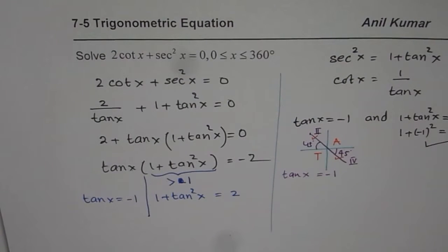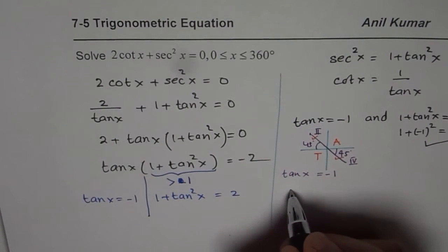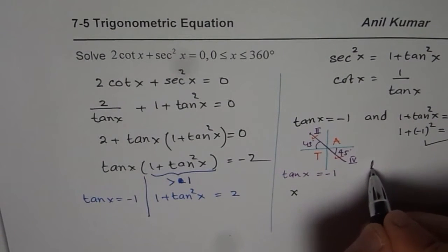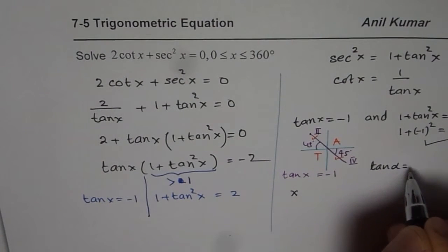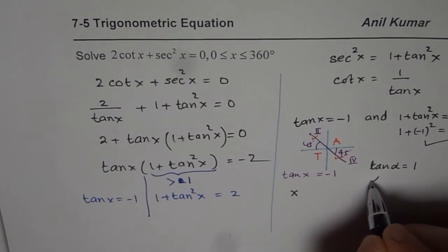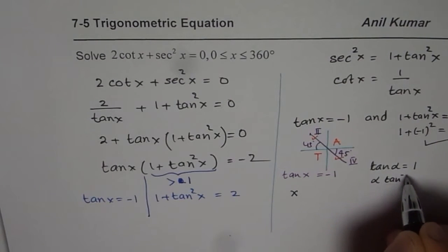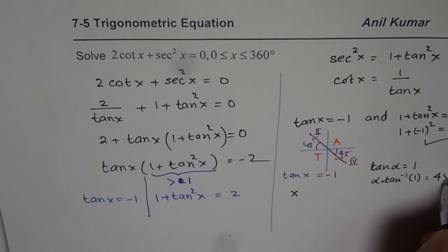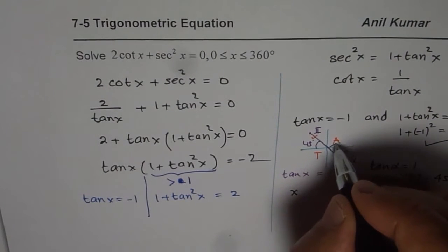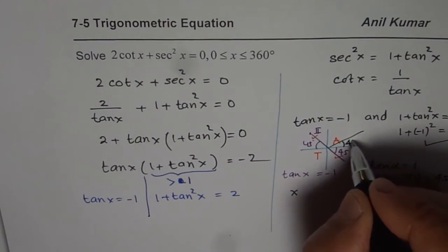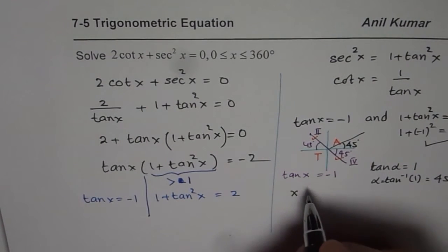So the principal angle for us is, for x is equal to, so we can do like this. We can do tan of alpha equals to 1. So alpha equals to tan inverse of 1 which is 45 degrees. So find first the acute angle. That is our policy.